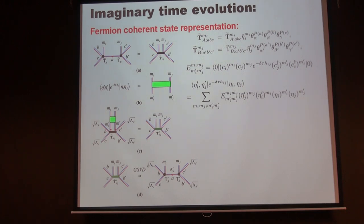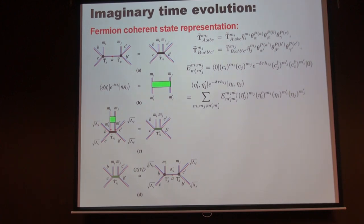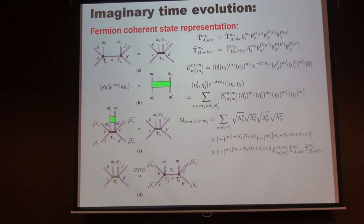In the simple update, we initialize the lambda weights all to one. After the local circuit, we get a fattened tensor, and we perform a singular value decomposition (SVD). For fermion tensors, there are two channels — a fermion channel and a boson channel — each with a different matrix, so we keep the leading singular values in both channels and reduce the fattened tensor back to normal size. We get a new lambda' and then repeat along the B and C directions. After one full cycle updating all lambdas, we move to the next step.